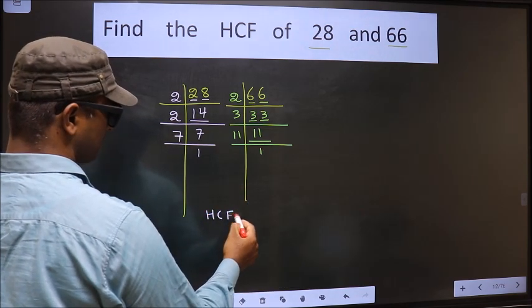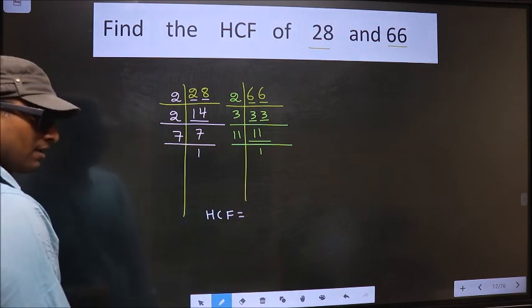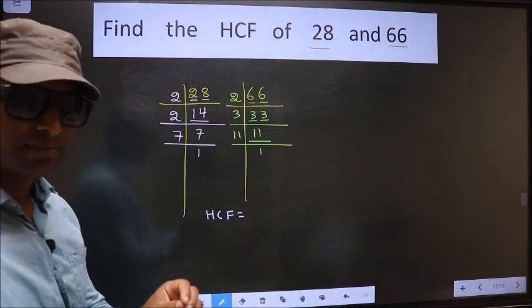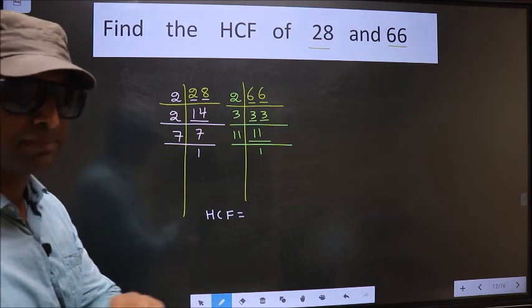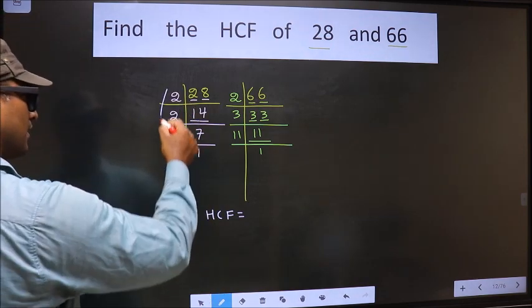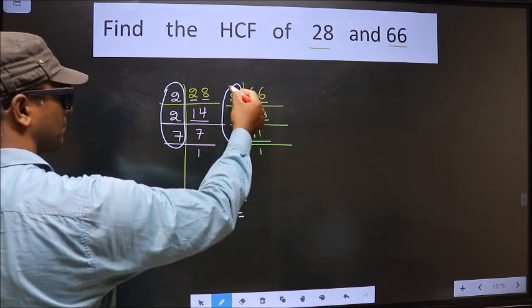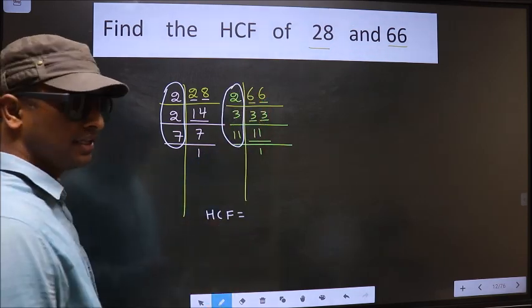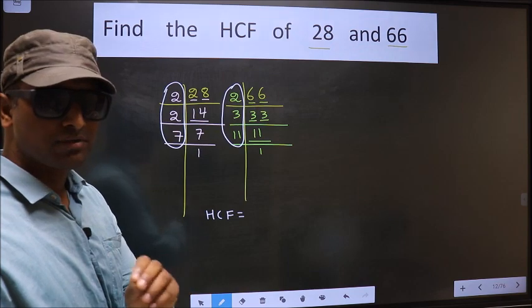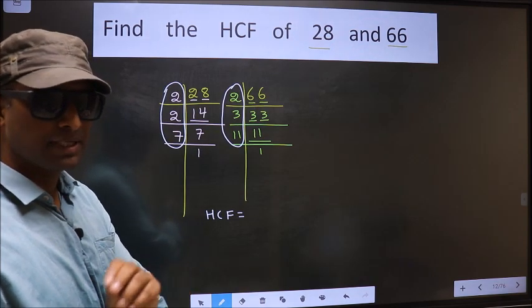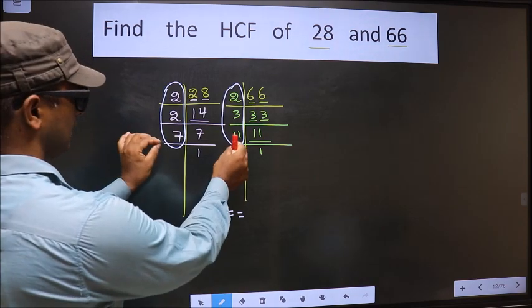HCF is the product of numbers which should be present here and also here. I repeat: HCF is the product of numbers which should be present in these two places.